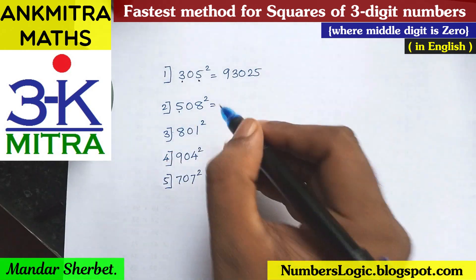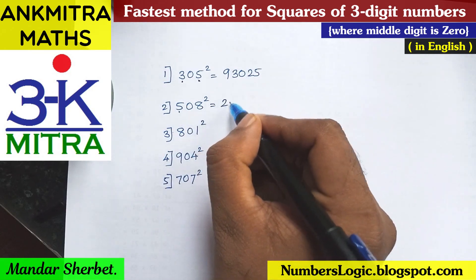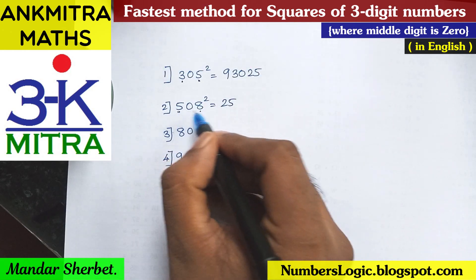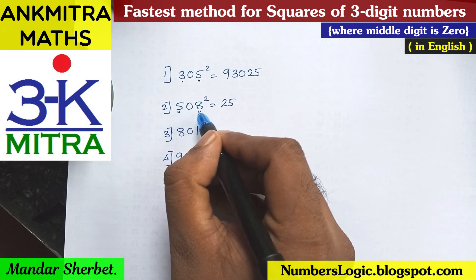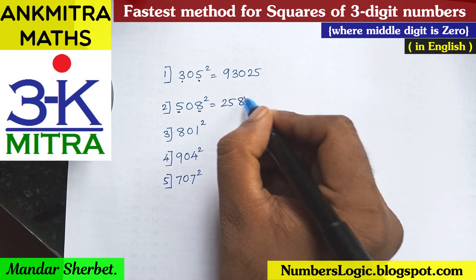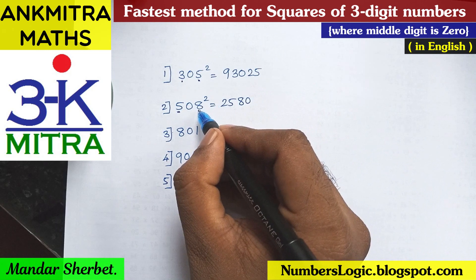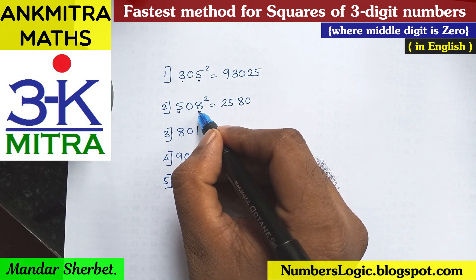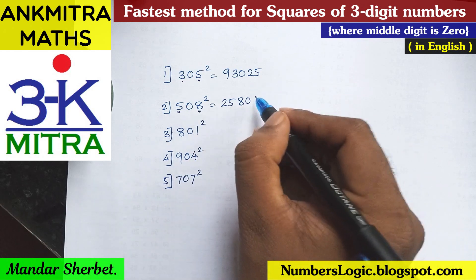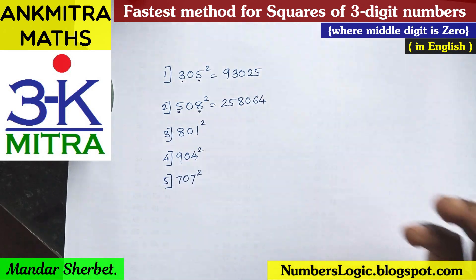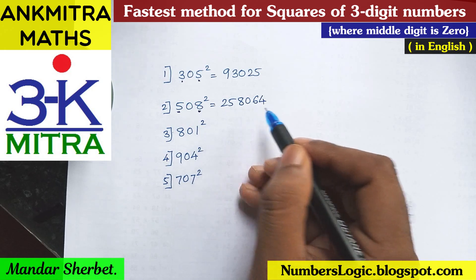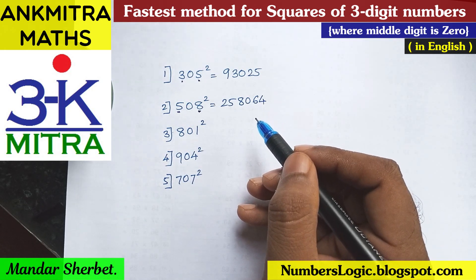Now the next example: 508 squared. We start with the leftmost digit square — 5 squared is 25. Next, find the product of the end digits and double it: 5 times 8 is 40, and double of 40 is 80. The last step is the square of the rightmost digit: 8 squared is 64. So 508 squared is 258064 — the correct answer.